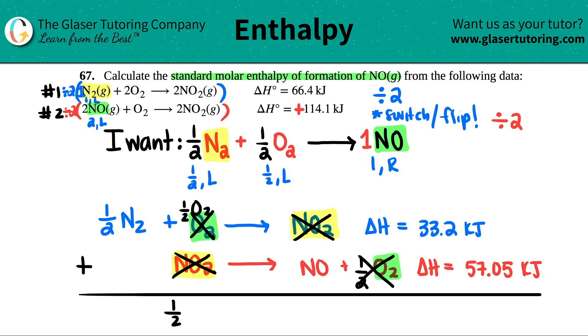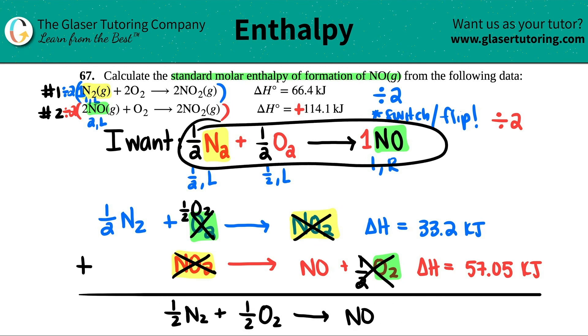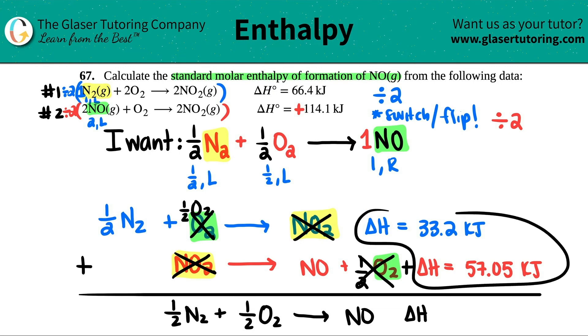Nothing else I can cancel. So now I'm ready to just write it out and see if I did it correctly. Let's see, one half N2, that's this, plus I have the remaining one half O2 here yields NO. And that's exactly the equation that I wanted in the beginning. So I know I did it correctly. And now all we have to do is just add up the delta H's. So it would be 33.2 plus 57.05. I get 90.25. And that's kilojoules. And there you go. That's the answer. Calculate the delta H, 90.25 or 90.3 if we round. But either way, it's correct. And there you go.